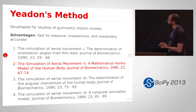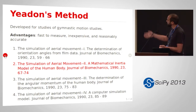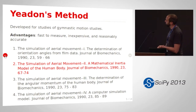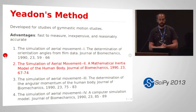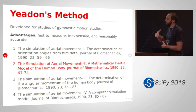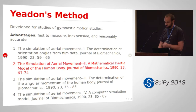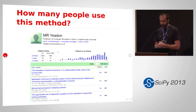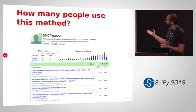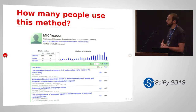A fellow named Fred Yeadon, in his dissertation in 1989 and 1990, had four papers. The second one, 'The Simulation of Aerial Movement — a Mathematical Inertia Model of the Human Body,' describes a simple model that he used for gymnastics studies and how people did flips and somersaults. We took this method — it's actually rather popular. This is the Google Scholar hits; his most popular paper is that one, and it has a decent number of citations for the biomechanics world.